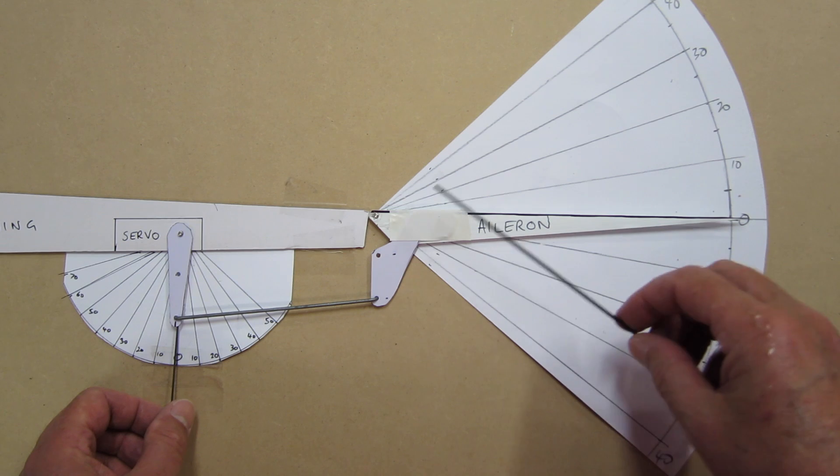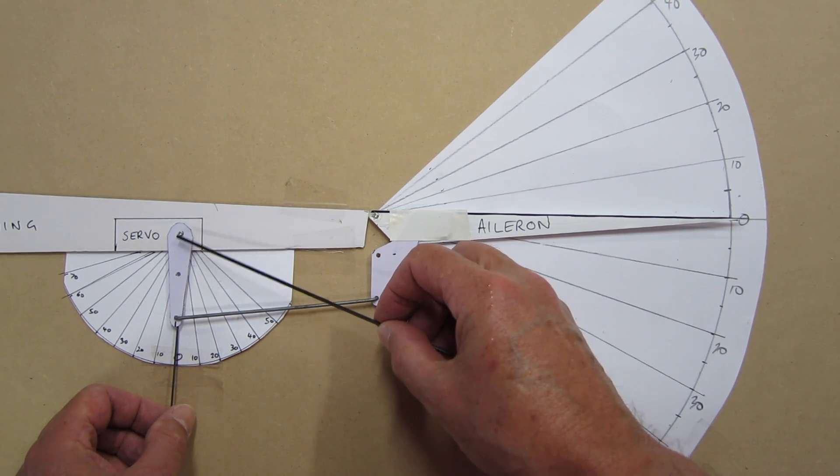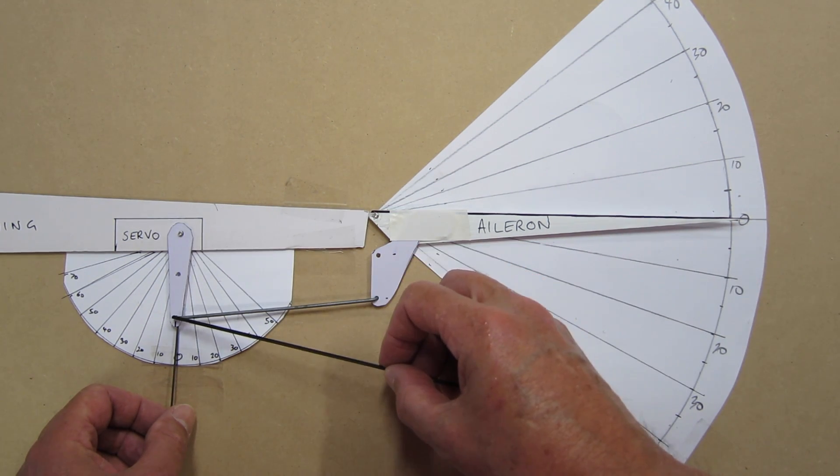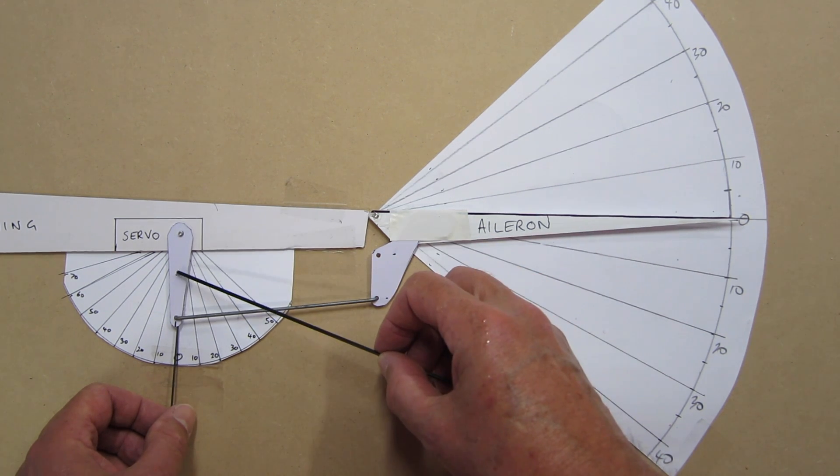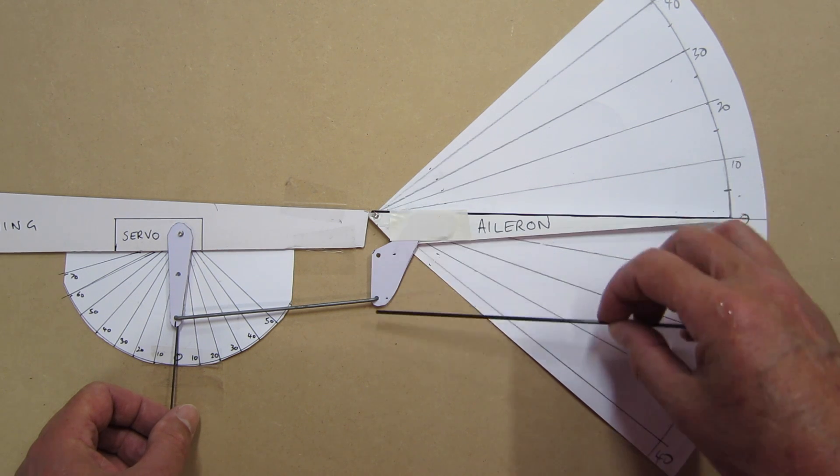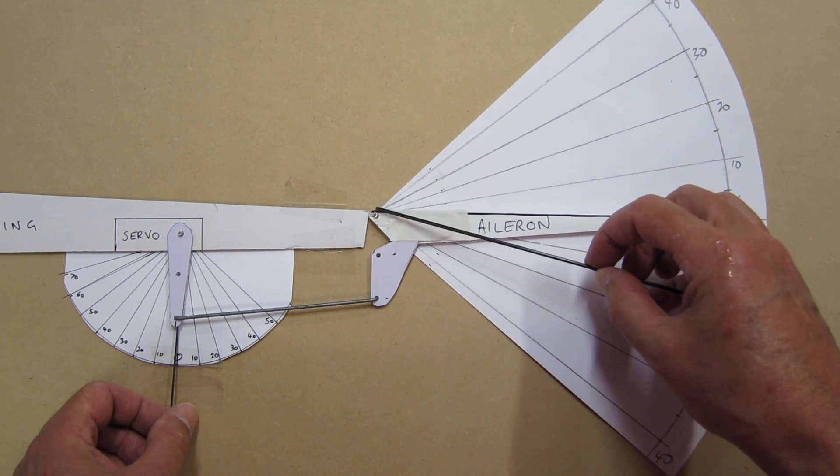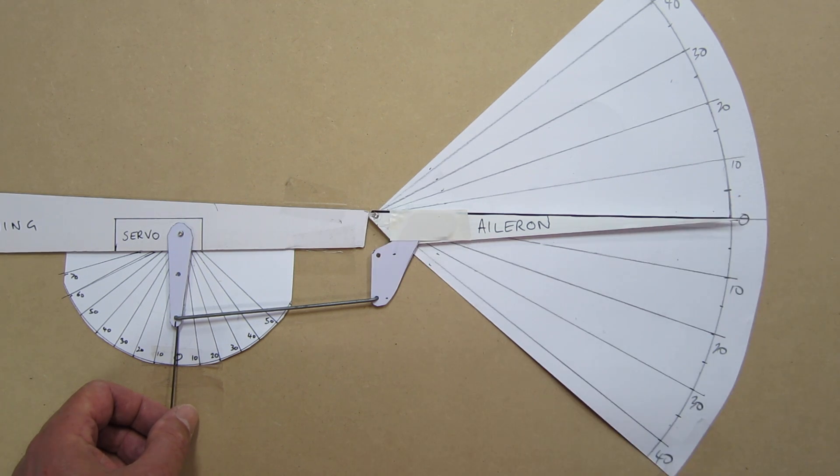So this is my basic setup. I have a servo arm, and this outer hole is 50mm out from the pivot point. This inner hole is 25mm out. And the same on the control horn. The outer hole is 50mm from the hinge, and the inner hole is 25mm from the hinge.